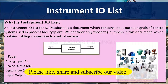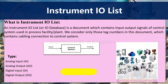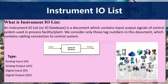In the diagram below, you can see there is a control system with some inputs coming in and some outputs going out. In this document, we will consider all the signals which are coming to the control system and which are going from the control system.